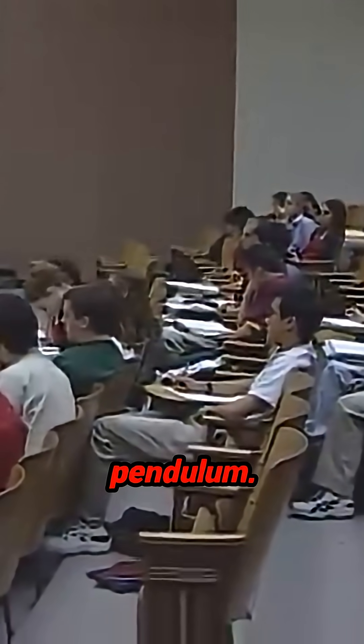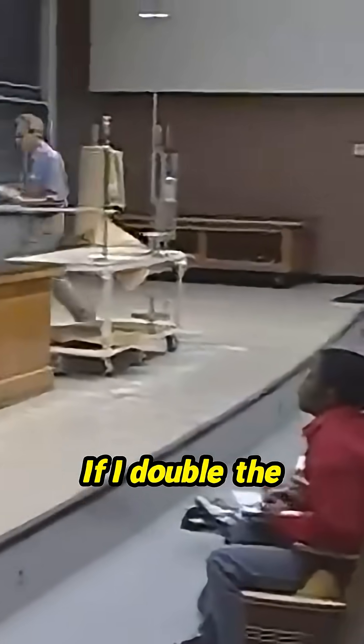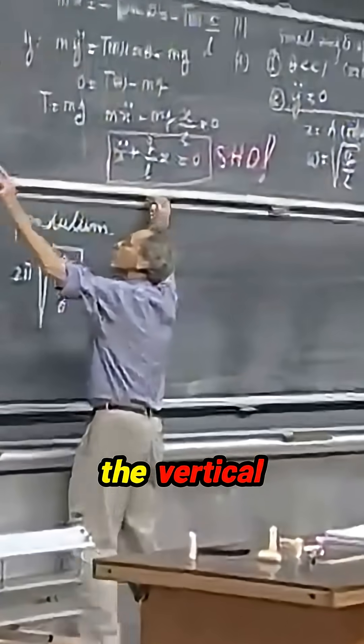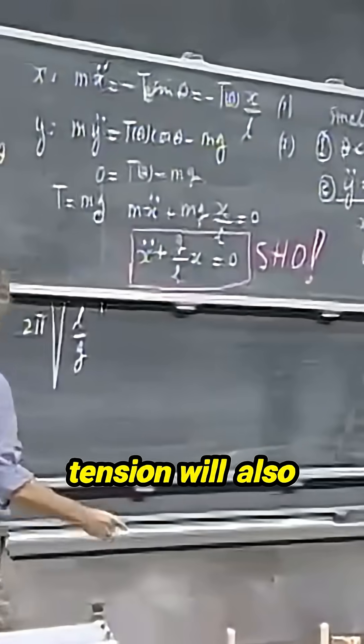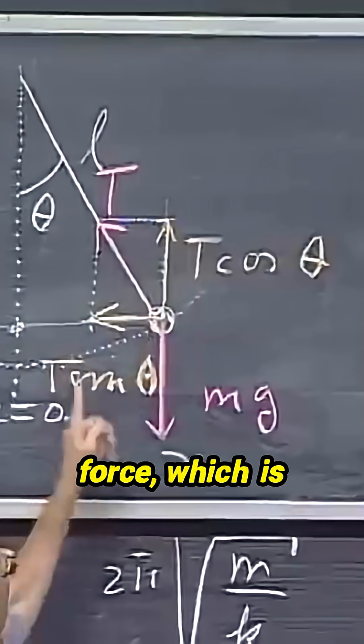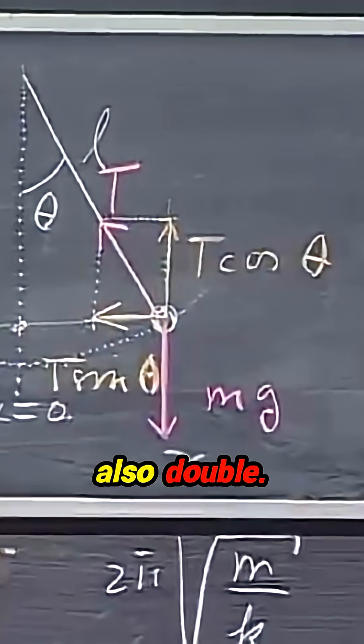Now go to the pendulum. If I double the mass of my bob at the end of a pendulum, then the vertical component of the tension will also double. That means this restoring force, which is proportional with the tension, will also double.